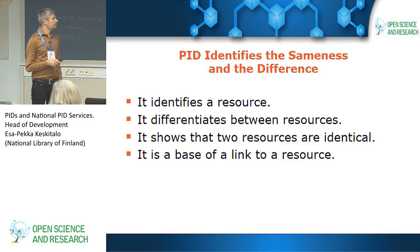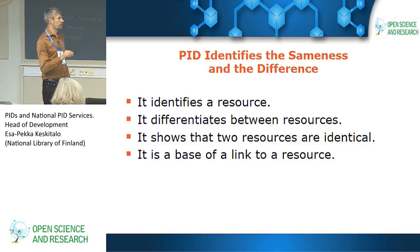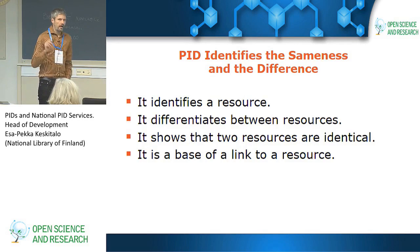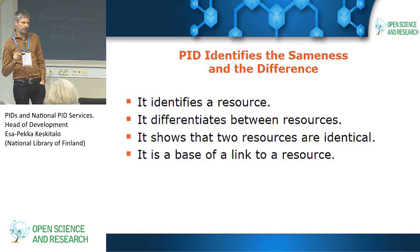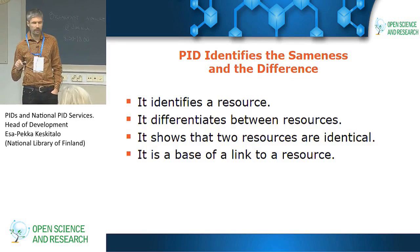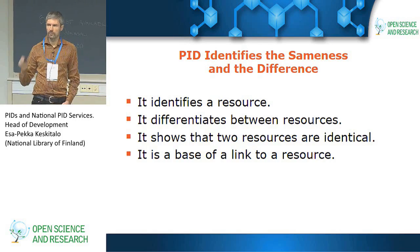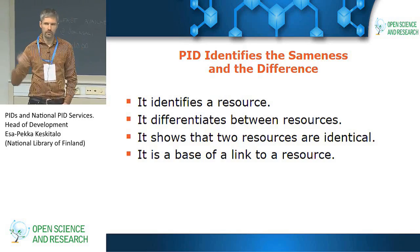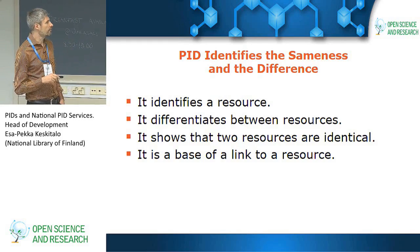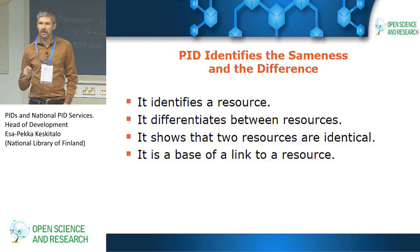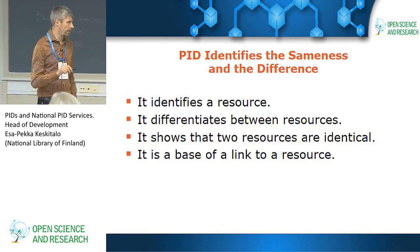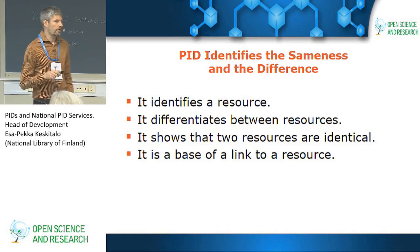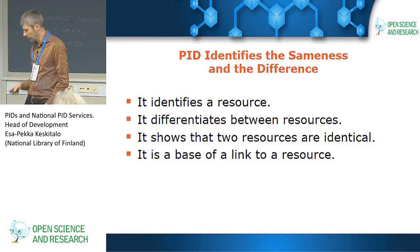A persistent identifier identifies a resource, and it's important that you can distinguish between two resources. The same data can be available in two different places — maybe that's not so common in research data environments, but it's very usual when we talk about publications. So it's very useful to tell apart and also to easily identify two information resources as the same resource. A PID as such is a string, so it's just characters, but on the basis of that string you can do different kinds of things and provide different kinds of services to users.